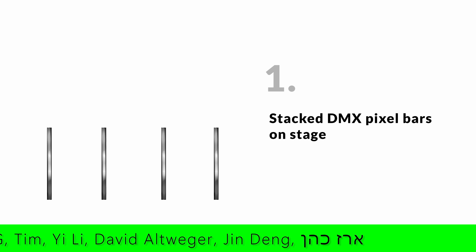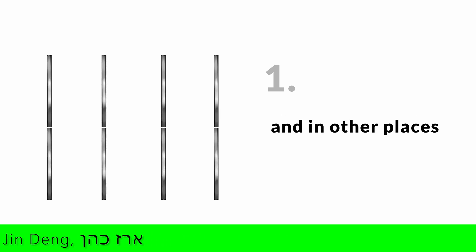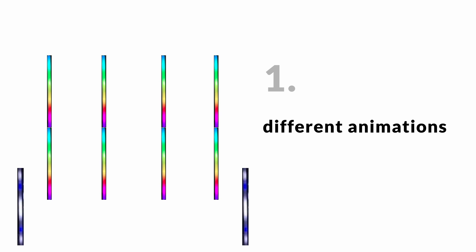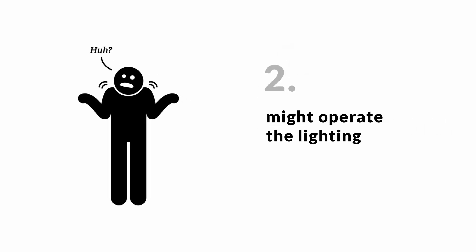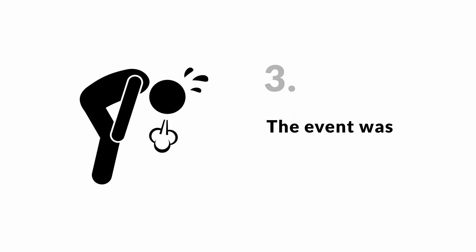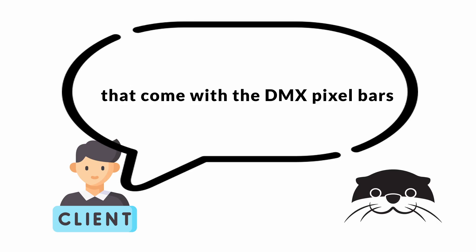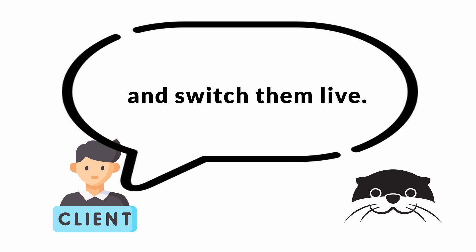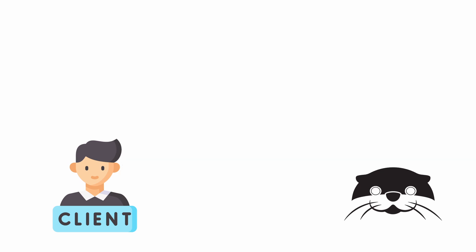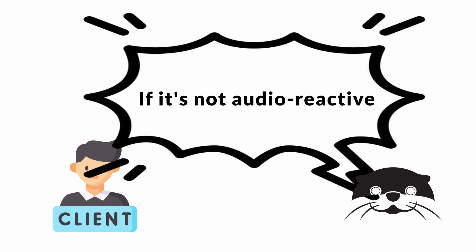Here were the requirements: stick DMX pixel bars on the stage and in other places, each with different animations. A non-specialist would operate the lighting. The event was five hours long. He also said let's use the template animations that come with the DMX pixel bars and just switch them.